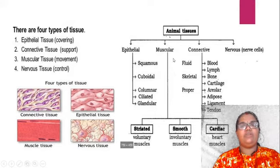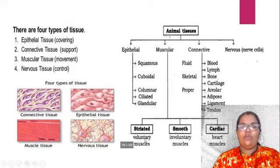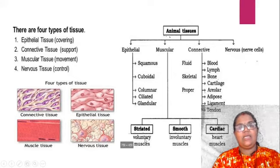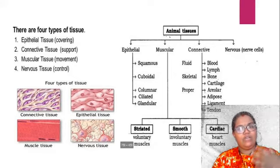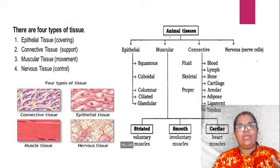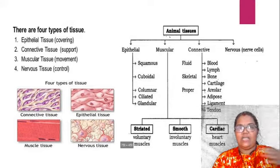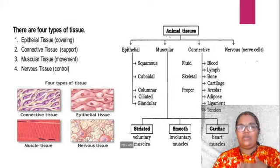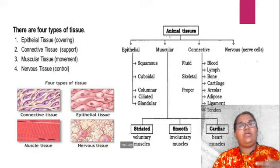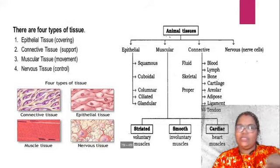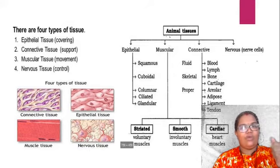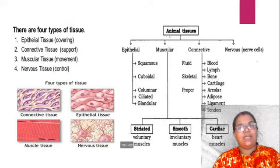The third one is muscular tissue. Muscles are also divided into three main categories. One is voluntary muscles, or striated muscles — wherever our will is acting. That means we can move the hands according to our will and control. It's under our control, so that's called voluntary muscles. These muscles are striated muscles.